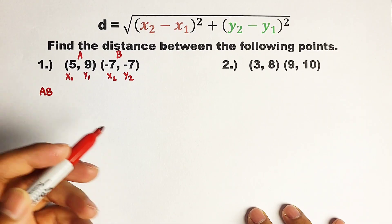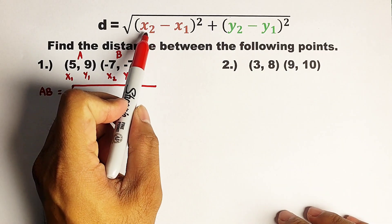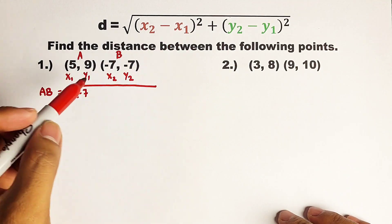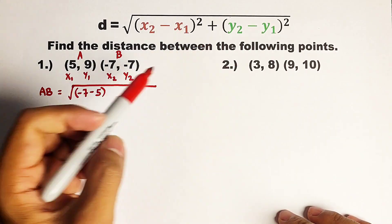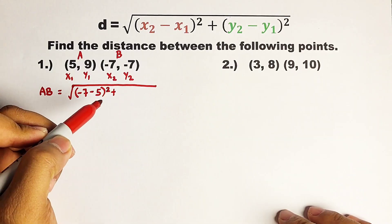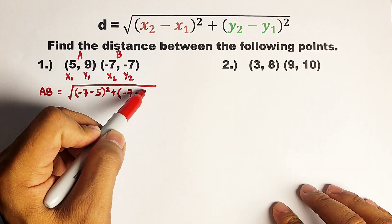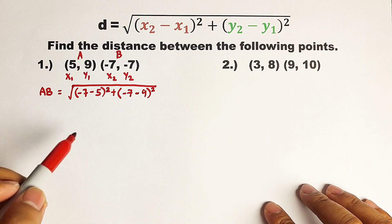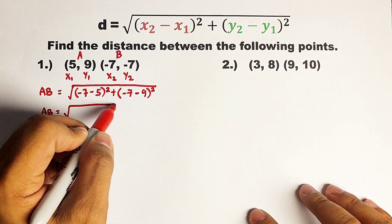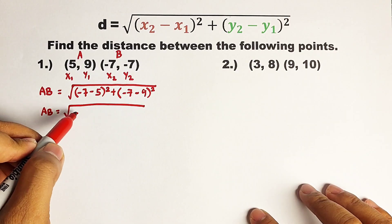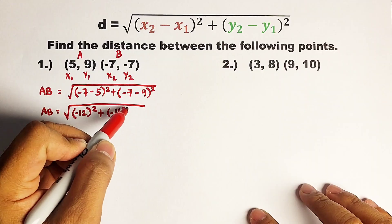Now, AB is equal to the square root of: your x sub 2 is negative 7, minus your x sub 1 which is 5, raised to the second power. Plus your y sub 2, which is negative 7, minus your y sub 1, which is 9, raised to the second power. After substituting each value, we simplify: negative 7 minus 5 equals negative 12, raised to the second power. Plus negative 7 minus 9, that is negative 16, raised to the second power.